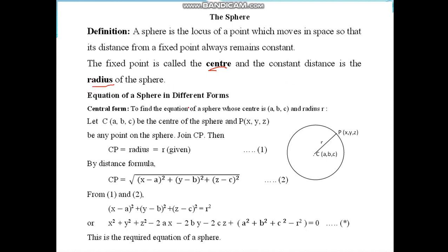There are different forms of sphere equations. Let us say first is called central form, or it is also called center-radius form. Let us consider here a sphere having center at the point (a, b, c) and radius is r. Let us suppose that P is any point on the sphere. Join CP, so clearly CP will be r. Now by distance formula we can find CP.